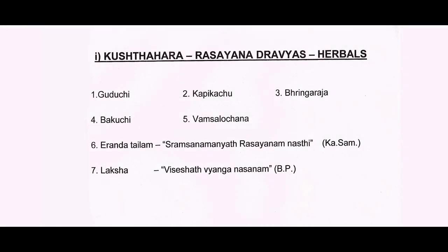Out of all Kostagana property drugs — Kostagana, Kostahara, Rasayana drugs from herbal sources are: one, Guduchi; two, Kapikacchu; three, Bhrangaraja; four, Bakuchi; five, Amsalochana; six, Erendataila. As earlier discussed in Kasyap Samhita, Lakshasayam is a very good drug to get rid of Vyangam. Vyanga condition is generally seen in post-menopausal conditions — Bhavaprakashikara says Lakshasayam is a very good drug for excellent application.